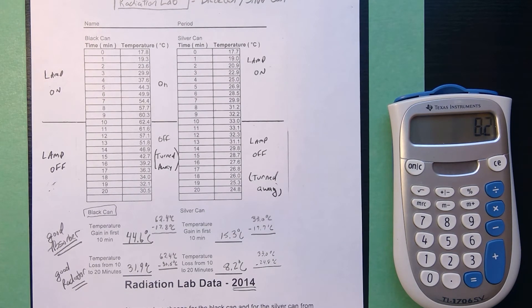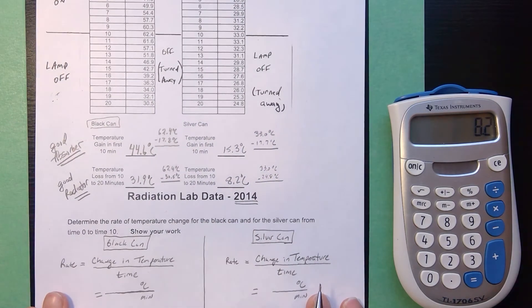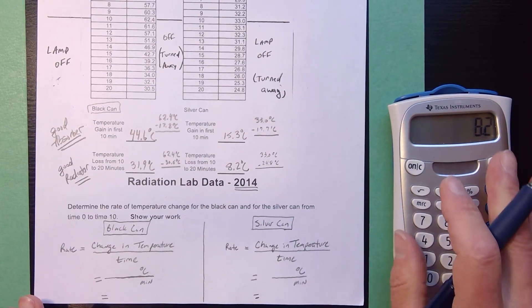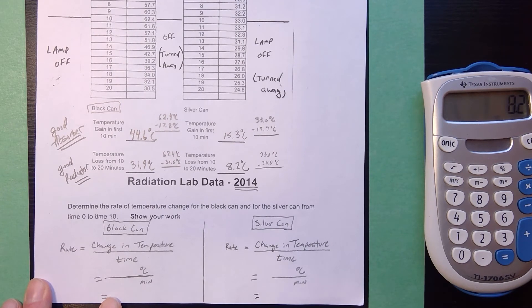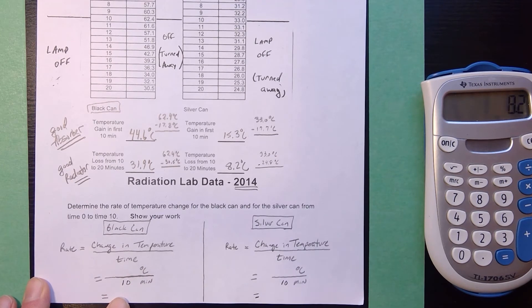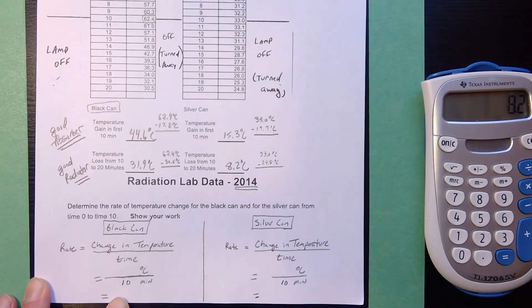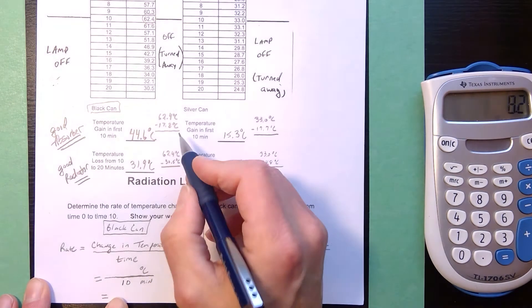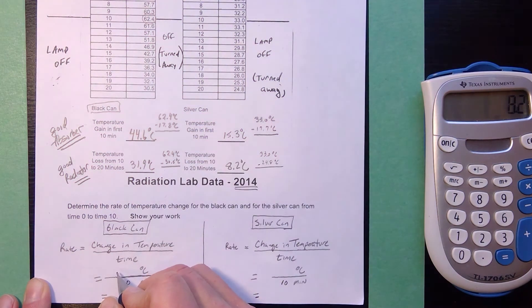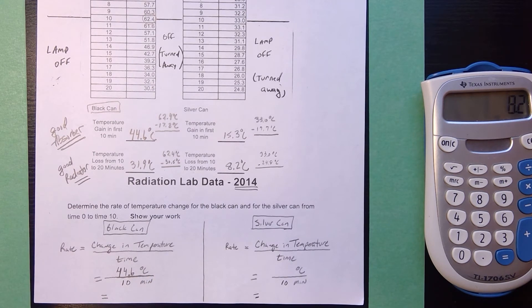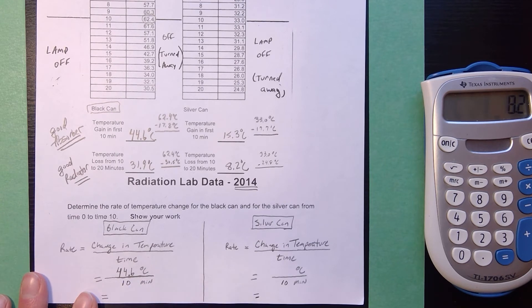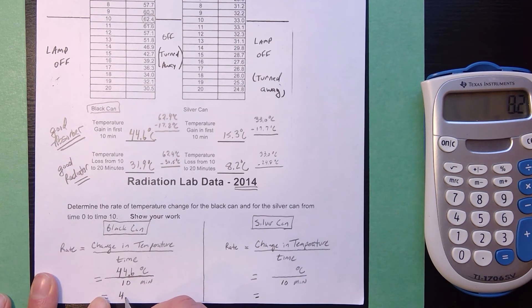Two calculations for the rate of change one for the black can one for the silver can you write the formula you substitute with units you solve with units so down at the bottom we've got a little bit of math make sure you divide it into two columns for the first 10 minutes both of these are 10 minutes so I'm going to put in the 10 minutes but the black can went up to 62.4 it went from 17.8 to 62.4 so the black can went up 44.6 degrees Celsius in the first 10 minutes when I divide by 10 I shift the decimal 4.46 would round up to 4.5 so the black can showed a rate this is the average rate of 4.5 degrees Celsius per minute.